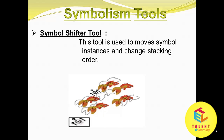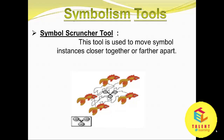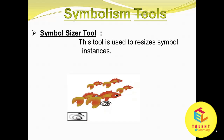Symbol Scruncher tool: this tool is used to move symbol instances closer together or further apart. This is the icon for the Symbol Scruncher tool.